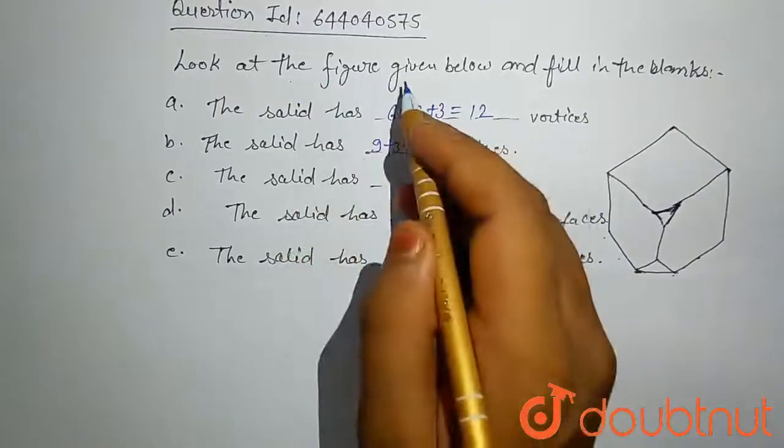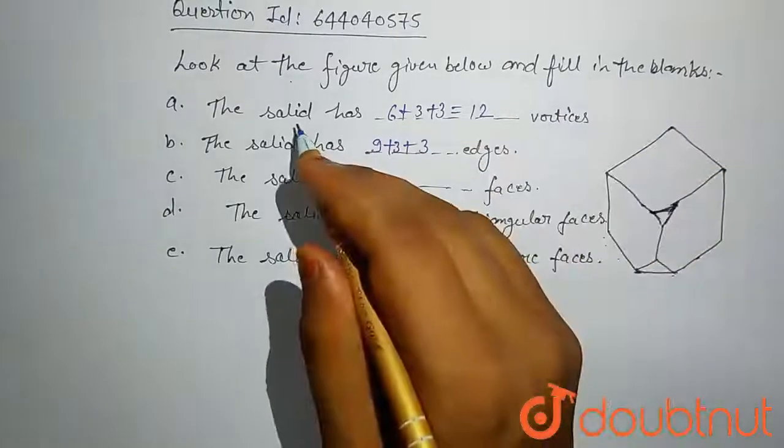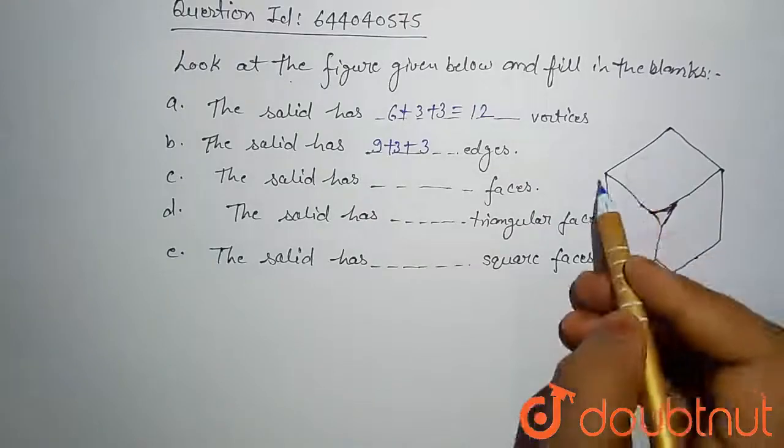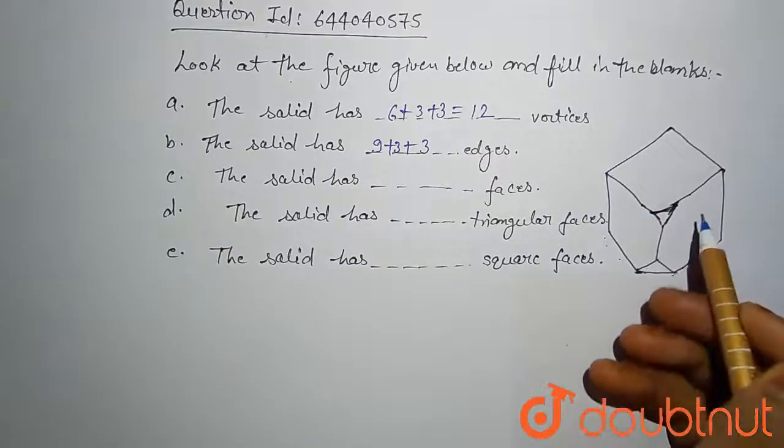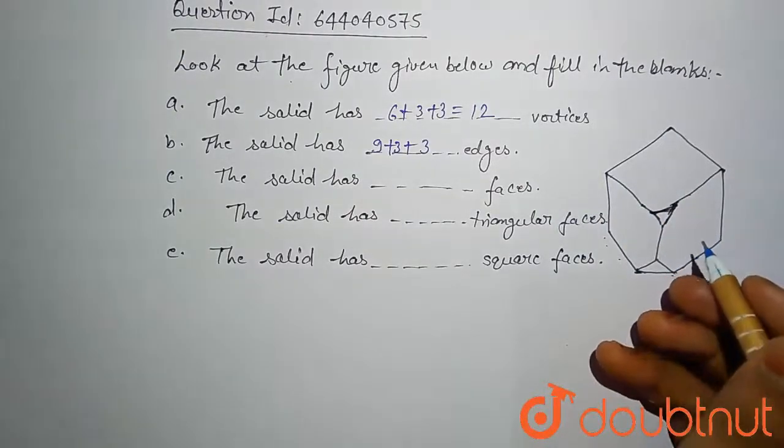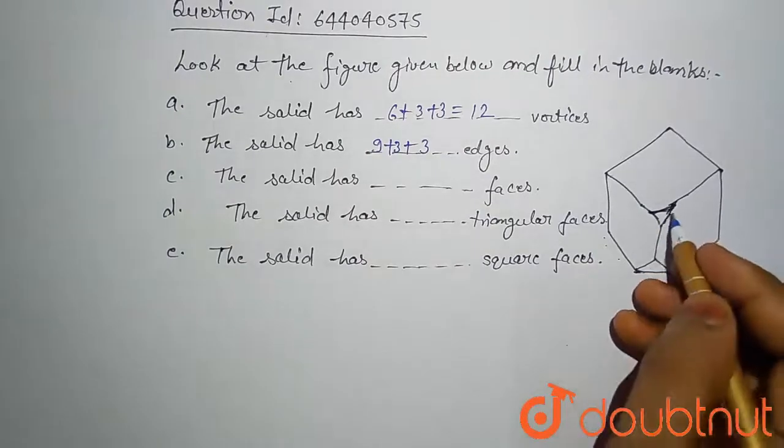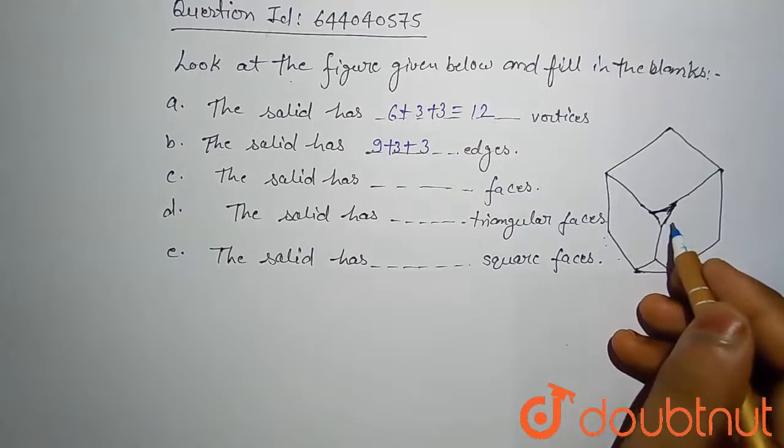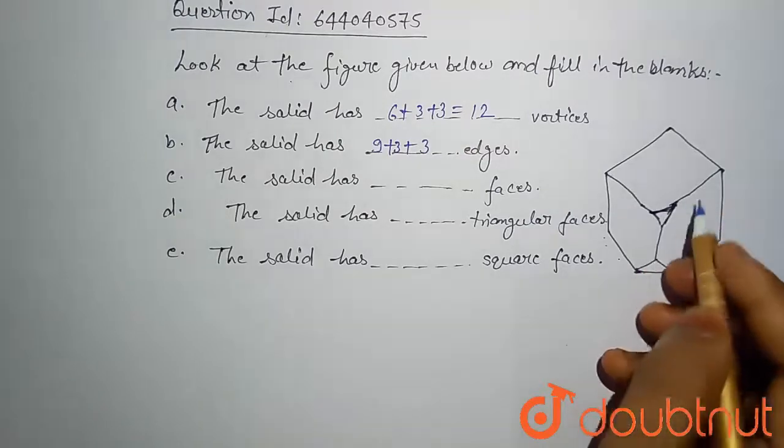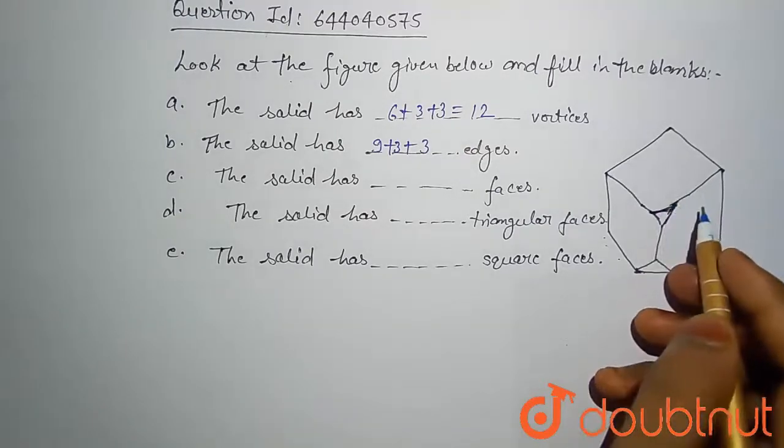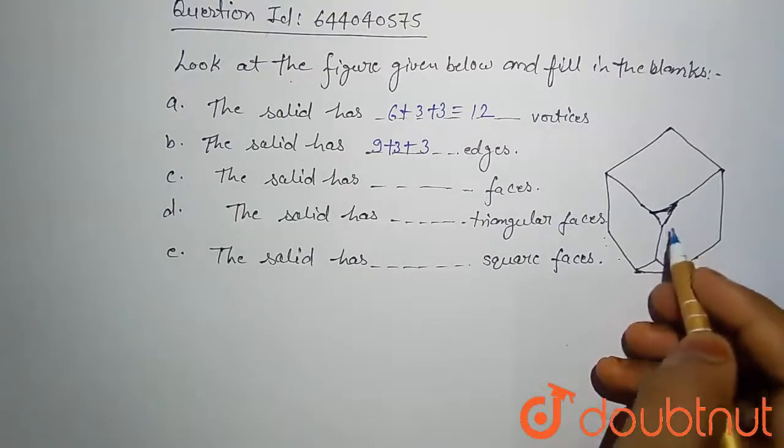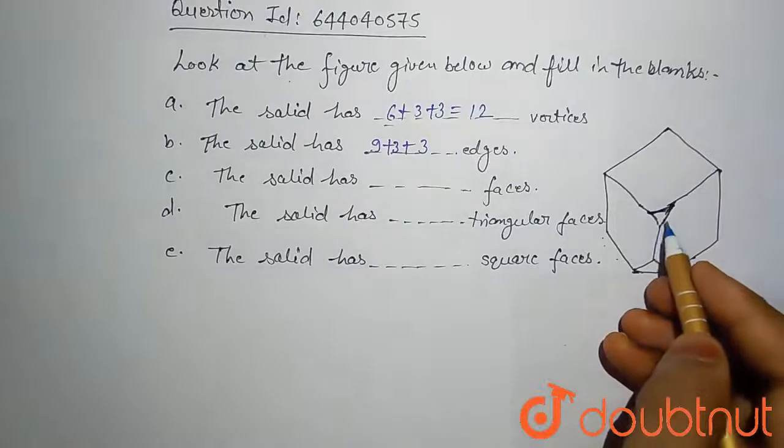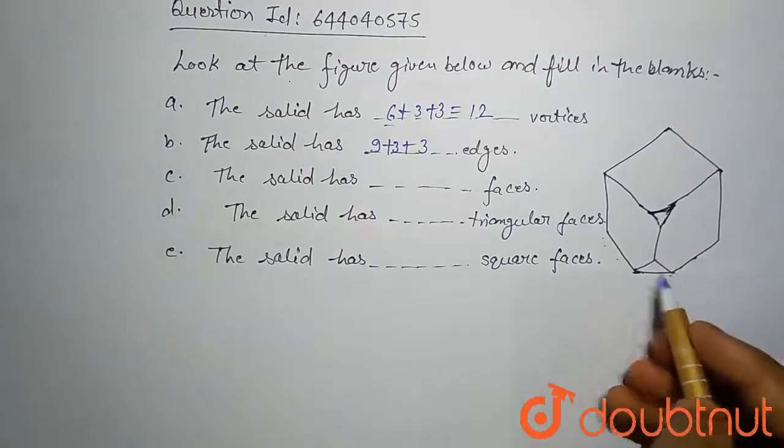Look at the figure given below and fill in the blanks. The solid has vertices. Here you can see, if a cube has eight vertices and two white triangular here truncated at the corner, then total 12 vertices. Eight vertices, if two are subtracted, this becomes six vertices, and three vertices of this triangle, three vertices of this triangle - three plus three which is 12.